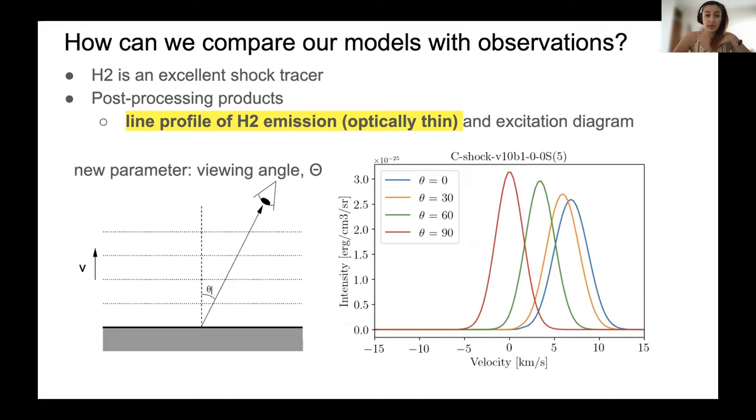One of those is line profile of H2 emission, which is shown here in this plot on the right. Here, we introduced a new parameter, which is the viewing angle, which basically gives us the angle between line of sight of the observer and the velocity of the shock. And changing that parameter, we see that the line profiles shift and they also become broader, but the surface underneath all of these curves is the same no matter from which angle we are viewing the shock.